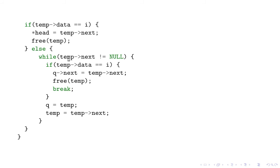Then we check if temp->next is equal to null. What temp->next actually is — it is q's next->next. So if that is not null it goes inside and checks if temp data is equal to i, that is q->next data is equal to i. If it is there, then what it does is it points q->next to temp->next, that is q->next->next, so q->next becomes q->next->next.